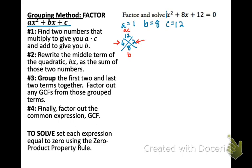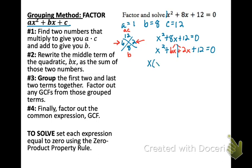We are breaking apart this trinomial. Step two: rewrite the middle term — in this case 8x — using the two numbers we found. So I rewrite 8x as plus 6x plus 2x. You can tell it's the same thing: 6 and 2 are 8, but we're just breaking the trinomial apart to factor it. Step three: group the first two and the last two terms together using a short dividing line. Look at the first two terms, x squared and 6x, and factor out a greatest common factor, which is just x.